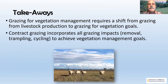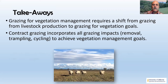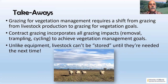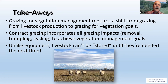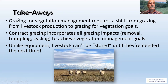Grazing for vegetation management is a real shift from livestock production. Contract grazing incorporates all grazing impacts — removing vegetation, trampling, and nutrient cycling — to achieve particular goals. Once you're done grazing a cover crop, you don't just lock the sheep in a shed and wait until next year. That's a year-round commitment, so thinking about the year-long forage calendar is really important, whether you're doing livestock production or contract grazing. I'll pause for questions, otherwise I can go on and talk about our experiences.